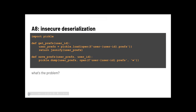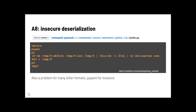One last OWASP issue: insecure deserialization. The pickle module is a great example. Using pickle.load to load a preferences file from the user seems straightforward, but the docs warn that pickle is not safe to use with any data provided by a user. If the user provides a crafted payload, loading it on your server will make a reverse shell to evil-server.com — as if the attacker has SSH shell access directly into your web server.